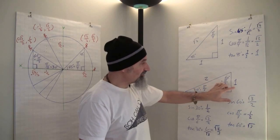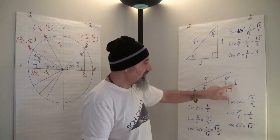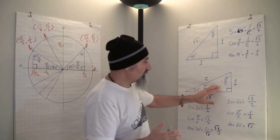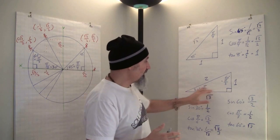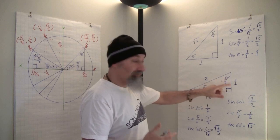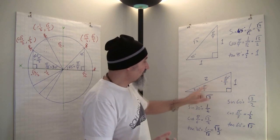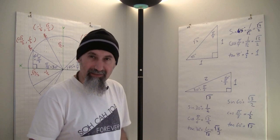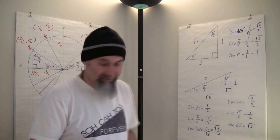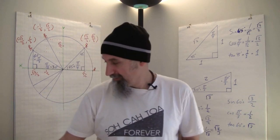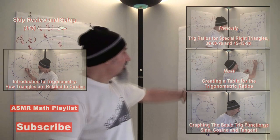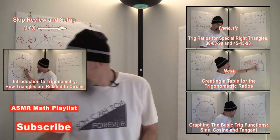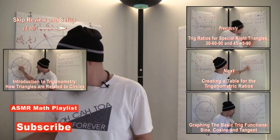What we're going to do is convince ourselves that the ratios of the sides of a triangle don't change — as long as the angles stay the same, as long as they're similar triangles. So let's take this down and convince ourselves really quickly what it is.